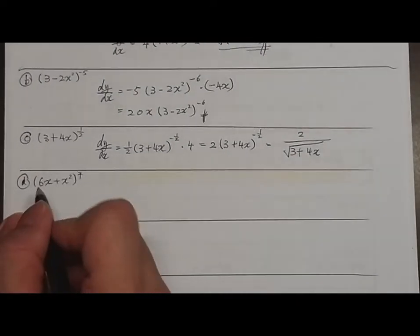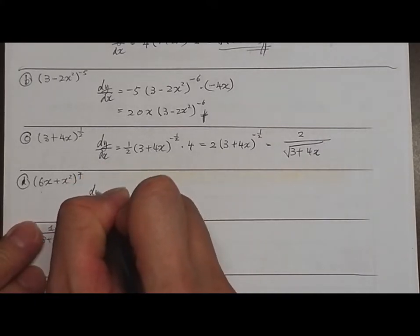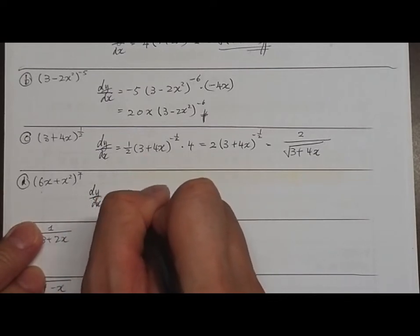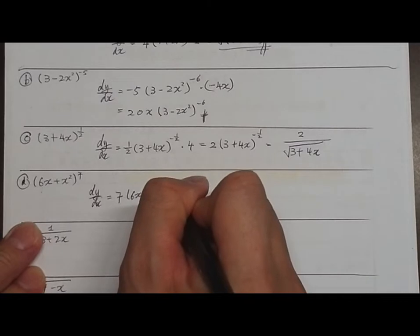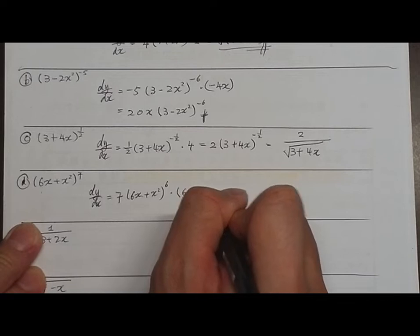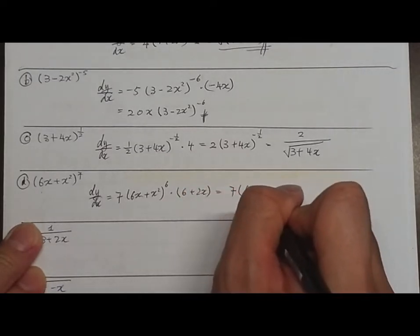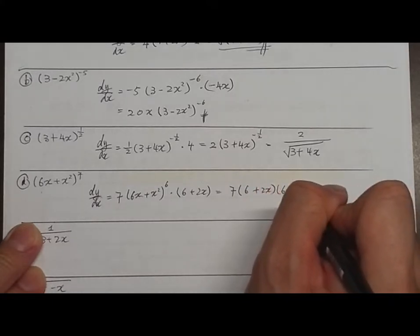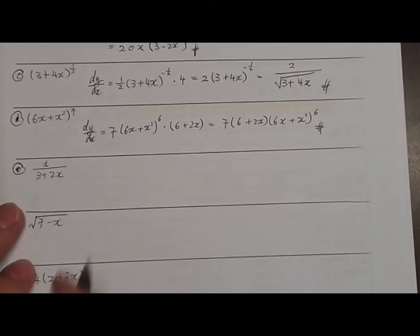Question D: y equals (6x + x²)⁷. dy/dx equals 7 multiplied by (6x + x²)⁶ multiplied by (6 + 2x).